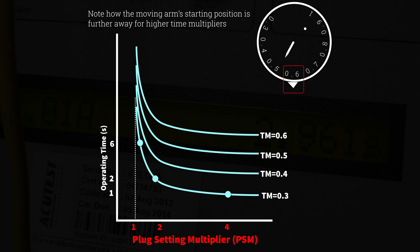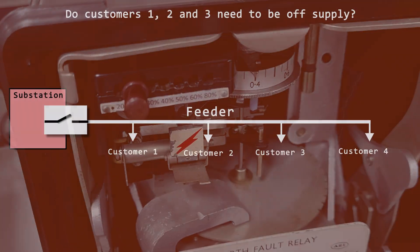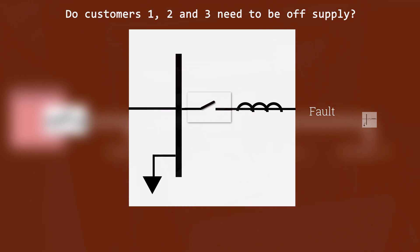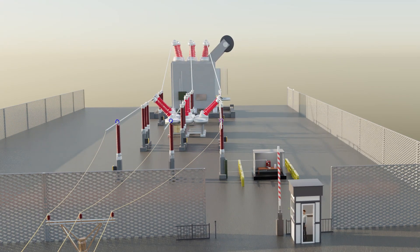multiple relays are spread along the feeder. And in order to ensure that only the faulty part of the network is disconnected, each relay can be carefully set to guarantee that the relay directly upstream from the fault is operated, thereby ensuring that all customers in the healthy part of the network can remain on supply. This process is called discrimination. I hope you enjoyed this introduction to overcurrent protection. See you in the next one.